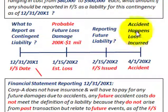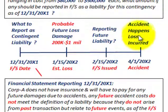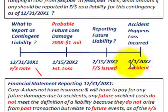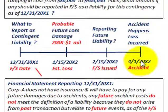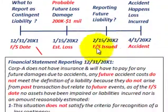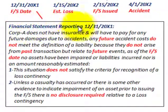One additional point: an actual accident did occur — a loss was incurred on April 1st, 20X2. So there was a real accident that happened after the financial statement date.